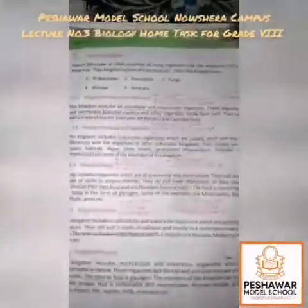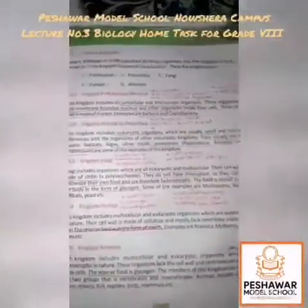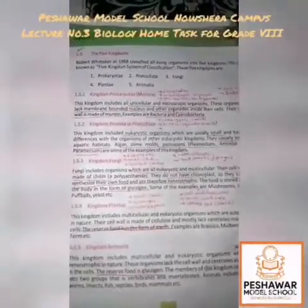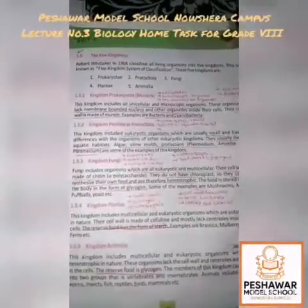The Five Kingdoms are: Prokaryote, Protista, Fungi, Plantae, and Animalia.